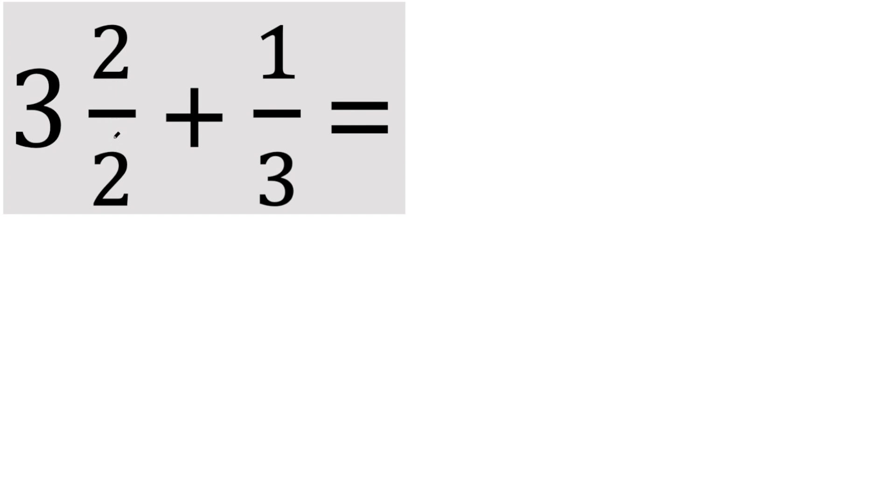Now this is interesting. 2 divided by 2, we know 2 divided by 2 is 1, because it's like you have $2, you have two friends. Each person would get a dollar. So instead of saying 3 plus 2 divided by 2, you could write 3 plus 1. And this is our fraction still, 1/3.